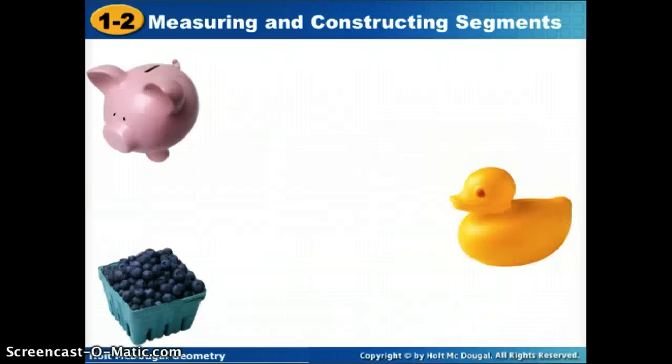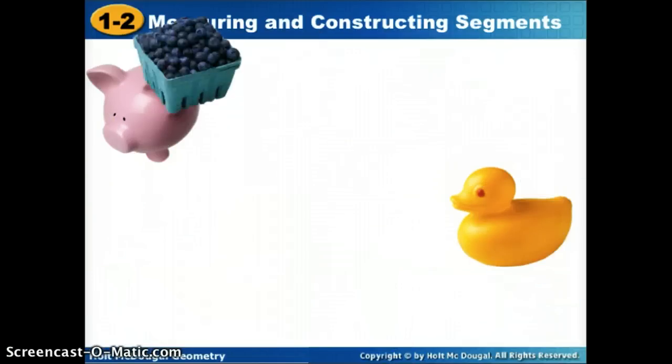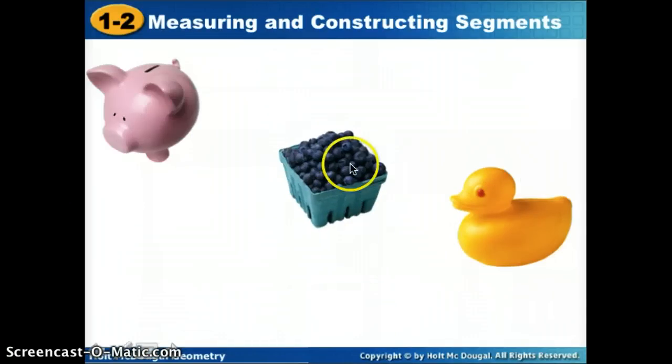Let's go back to that between idea. I've got some little friends here: the piggy bank, the rubber ducky, and the blueberries. Right now, I would say the blueberries are not between the rubber ducky and the piggy bank because it's off here to the side. So if we want the blueberries to be between our friends, we want to use that word collinear, meaning they could all sit on the same line. If they're not in a line, they're not between. They've got to be collinear.